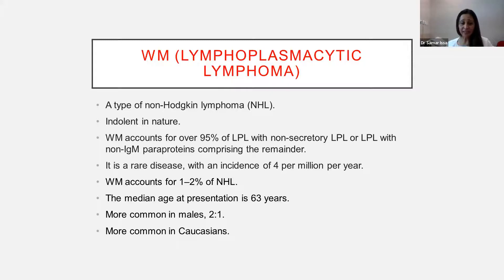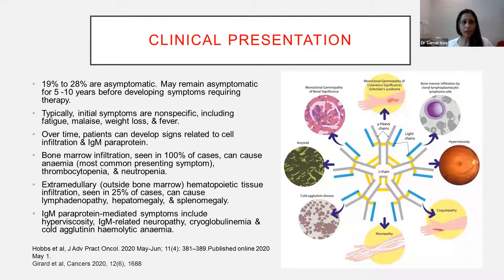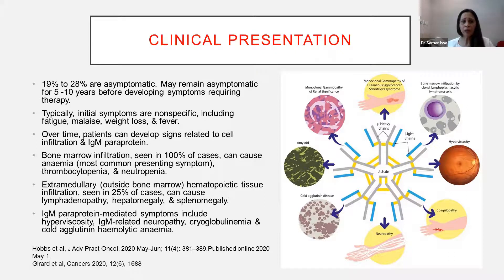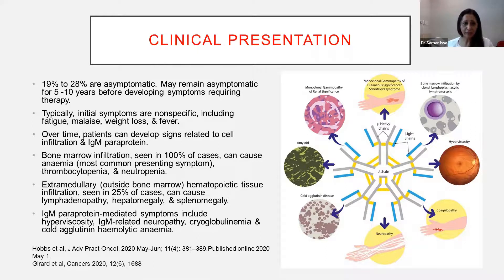Median age is 63 years. It is more common in males and more common in Caucasian people. Around a quarter of patients with Waldenström's are asymptomatic — diagnosed incidentally on a blood test. Sometimes it takes 5, 10 years or even more before patients develop symptoms requiring therapy. Typically, the initial symptoms are non-specific: fatigue, malaise, weight loss, and fever are common presenting symptoms.